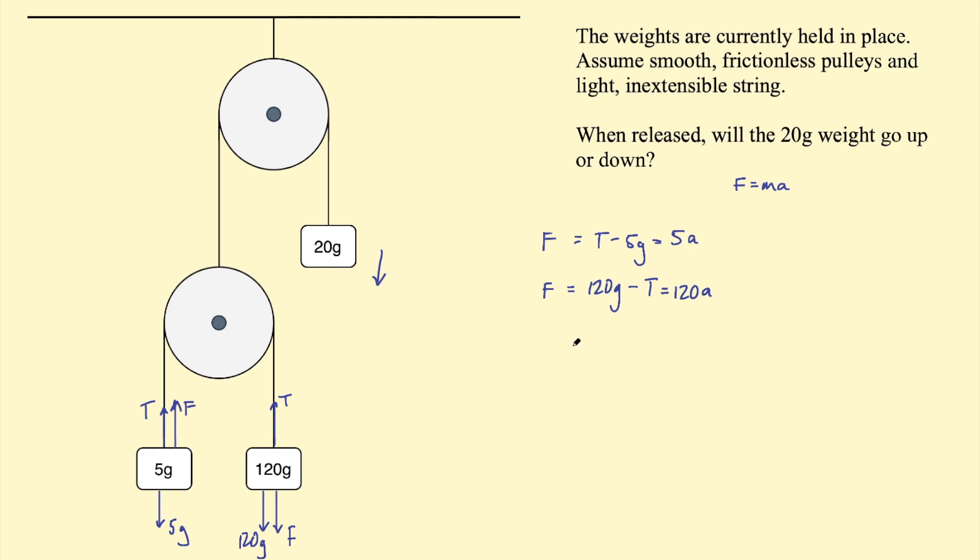Arranging this equation for A. So let's call this equation 1. Equation 1 would be A equal to T minus 5G on 5. Equation 2 would be 120 G take T on 120 equals A.